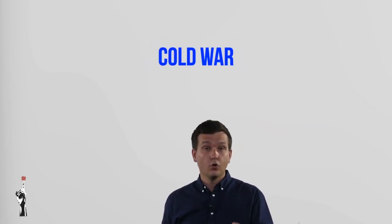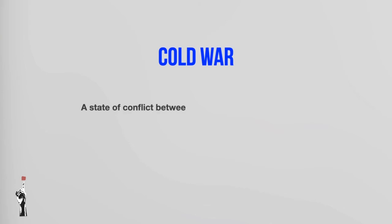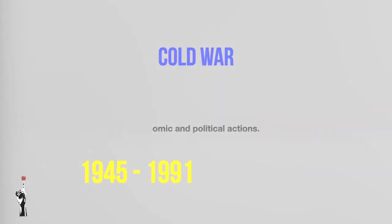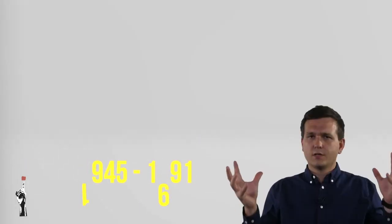The term we're going to discuss today is the Cold War. A cold war is a state of conflict between nations that does not involve direct military action, but is pursued primarily through economic and political actions. From 1945 till 1991, there was a lot of tension between Russia and America, but it never erupted in full-scale military conflict between those two countries directly — it remained in this state of tension.